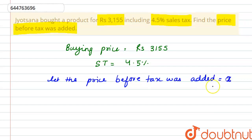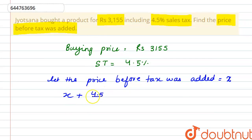So x is the price before tax. According to the question, x plus the tax — that is 4.5 divided by 100 multiplied by x — equals 3155.